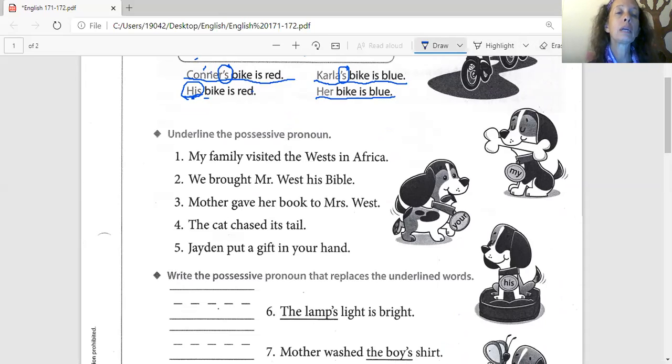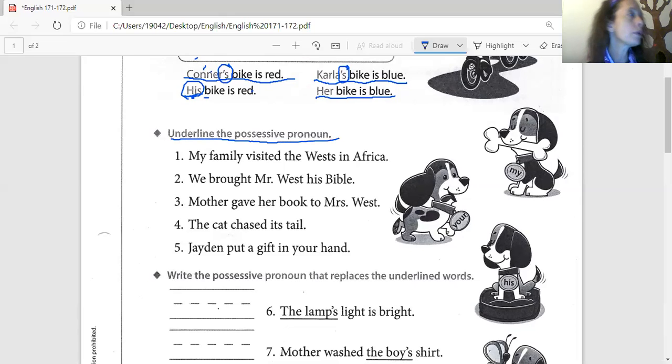Read the directions for me. Here we go. Underline the possessive pronoun. Okay. This is the pronoun that owns the thing. Number one, Preston. Preston. Preston. Read the sentence. My family visits the West in Africa. Who visits the West in Africa? We or wait? We. Oh, wait. Sorry. Hang on. Just a minute. I'm doing two things at once here. Why did that ring? Fourteen. No.